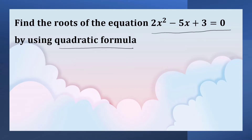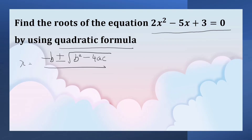The quadratic formula is: x is equal to minus b plus or minus the square root of b squared minus 4ac, upon 2a.